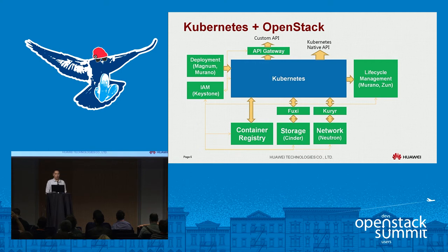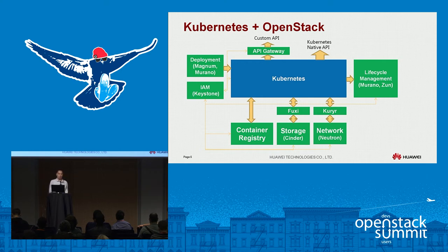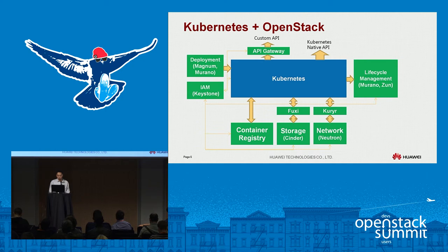For the container registry, we have an open source project called Dockyard — though we are changing the name due to Docker's branding issues with anything 'dock'-related. For storage, we can use Cinder, and for networking we use our current OpenStack projects. Fuxi is integrating with Kuryr right now, serving as a nice plugin bridge between Kubernetes and OpenStack.